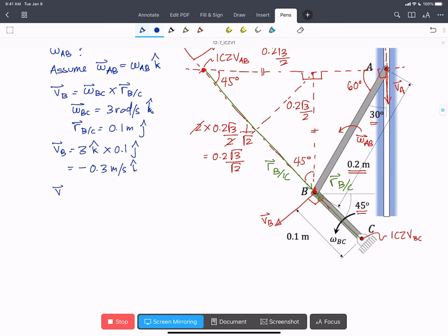And now we want to write a second one. So VB also equals omega AB, because B is a point on AB, cross with RB with respect to the IC. So we're treating it like this point, the IC of AB, is a point on the body and it's the point where there's zero rotation. It's acting like a pin at this instant. Because of that, we can write the simpler pure rotation or fixed axis rotation equation rather than the longer relative motion velocity equation.